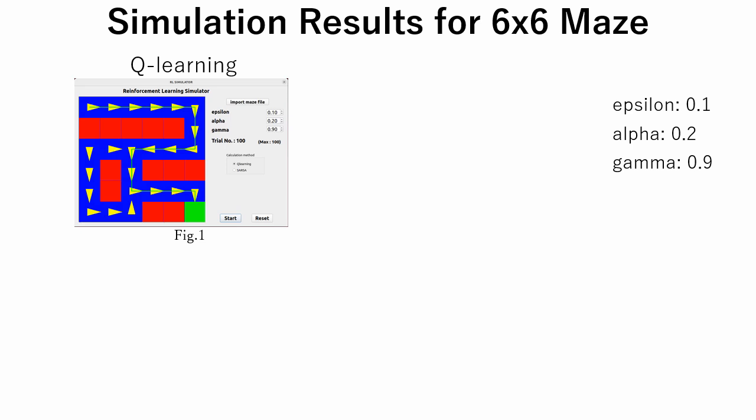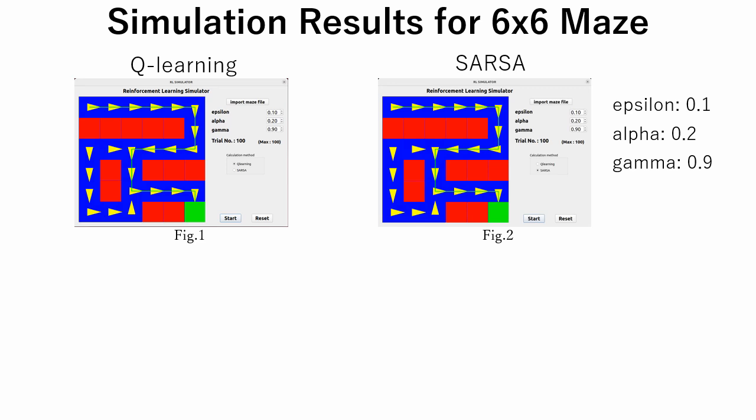Now let's see results of our experiment. Firstly, a 6x6 maze problem was solved using the default parameter values. Figure 1 shows results for Q-learning method, and figure 2 for SARSA method. The arrows in the figures point to the direction of the largest Q-value increase and the route from start to goal cells is shown by the green line. Both methods found the path from start cell to goal cell successfully and the depicted results are identical.